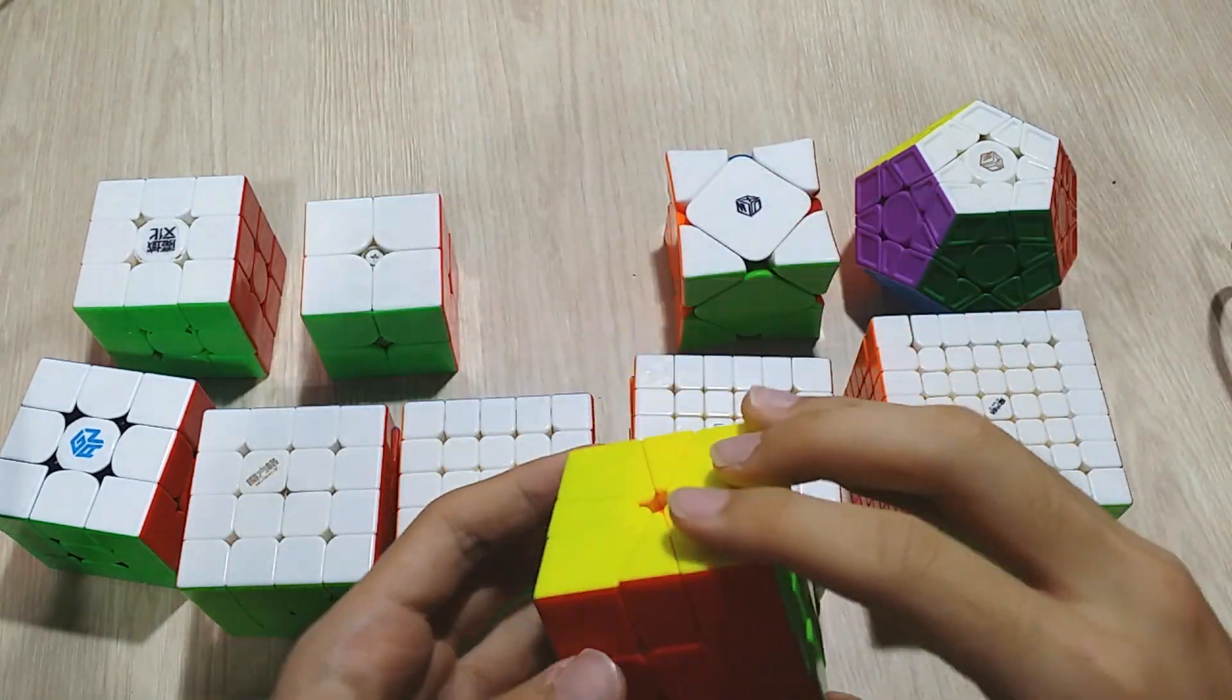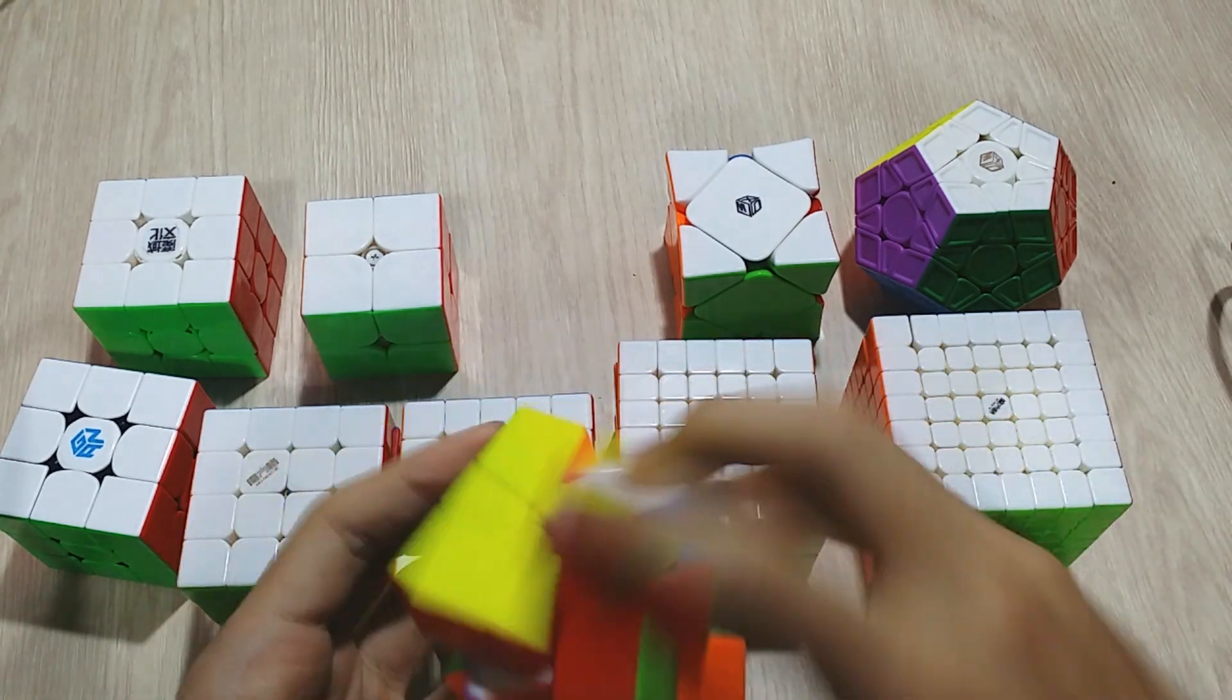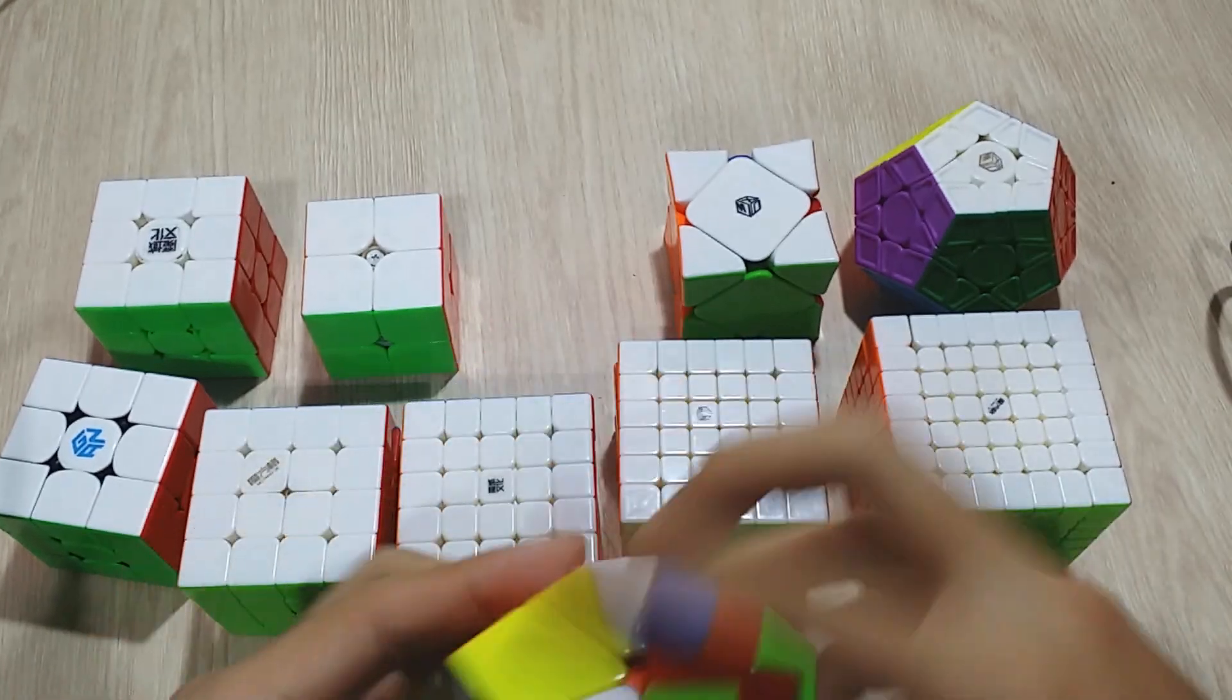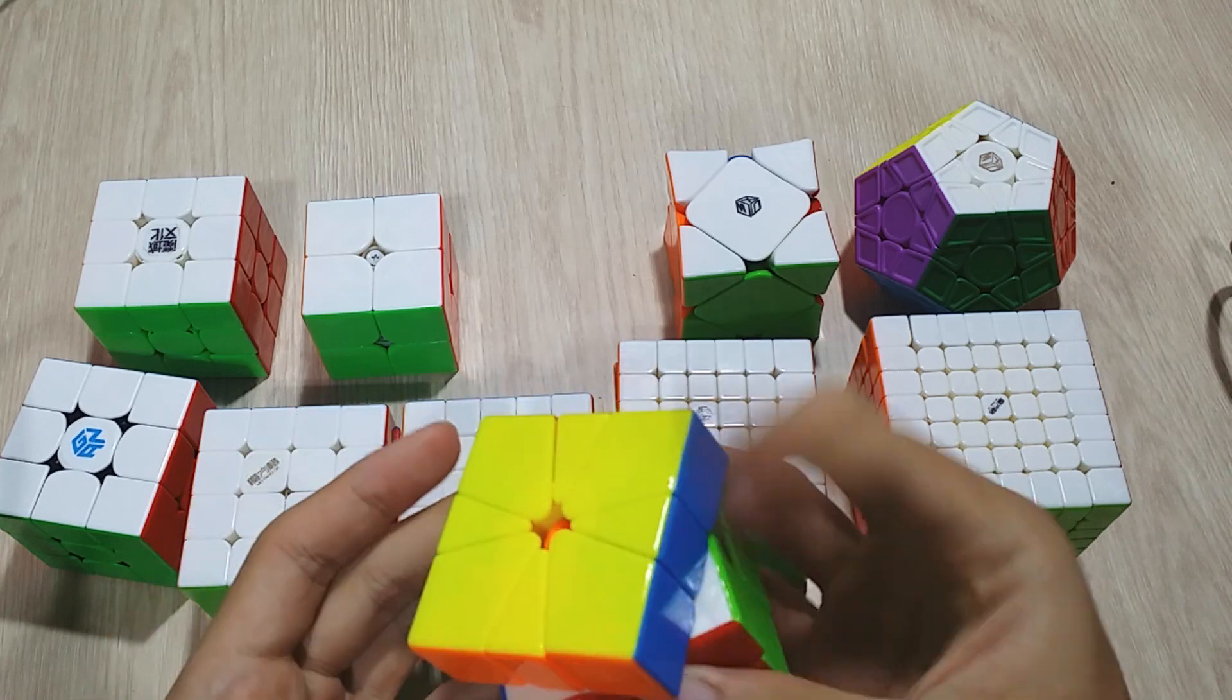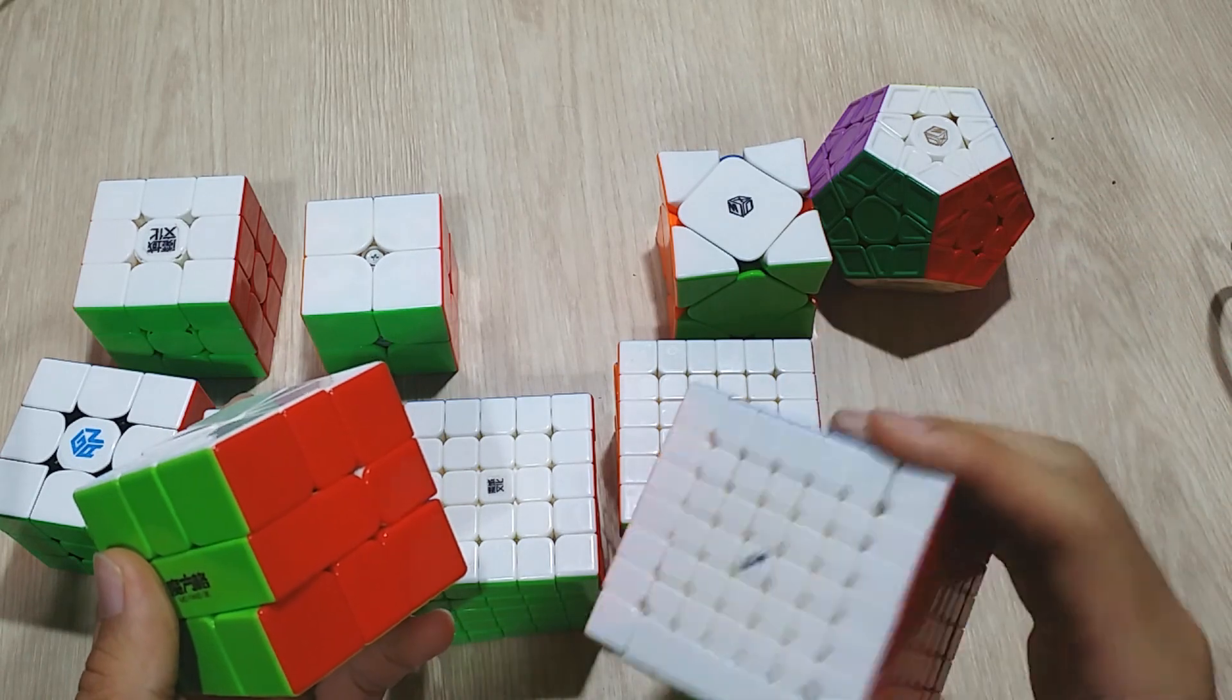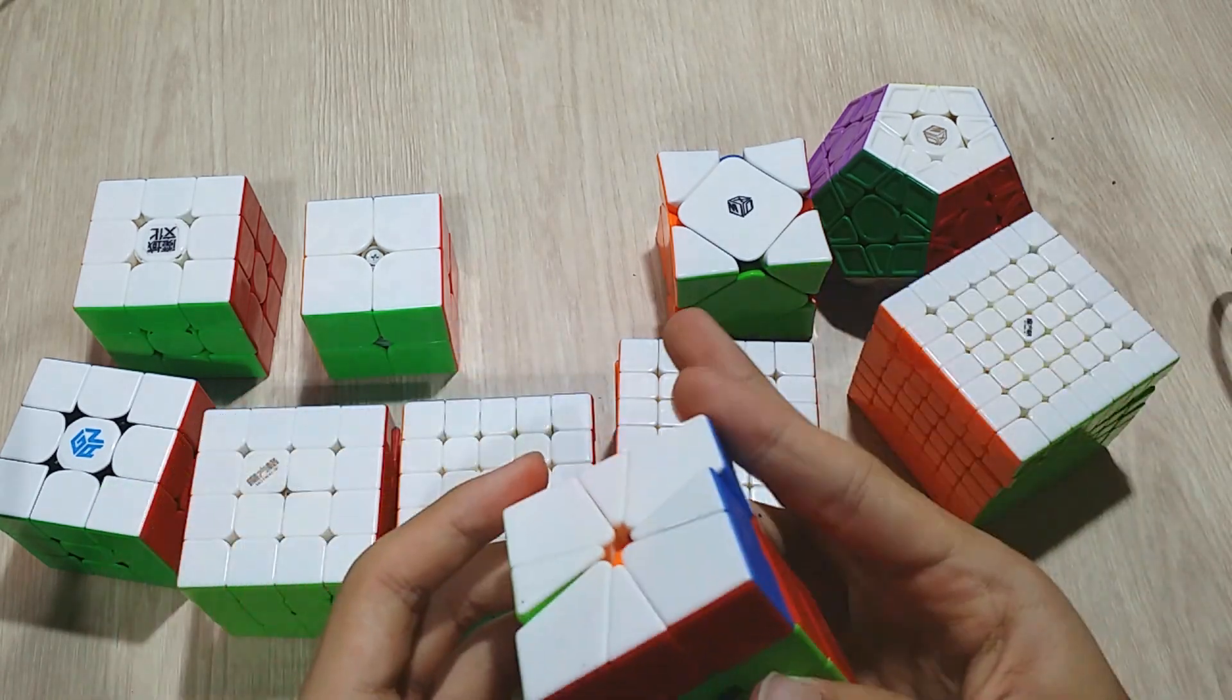Now for square-1, I use the Qi—the normal Qi. I don't really care about square-1, nor do I practice it, but it's still fun to play with sometimes. I average around like sub-1 with this. I'm very bad because I barely practice. And also I average around like sub-6 for 7x7, which is terrible.